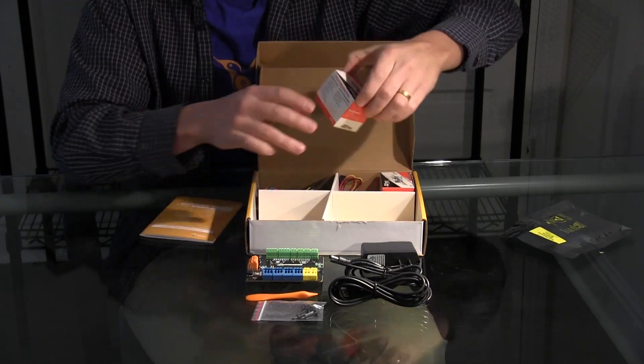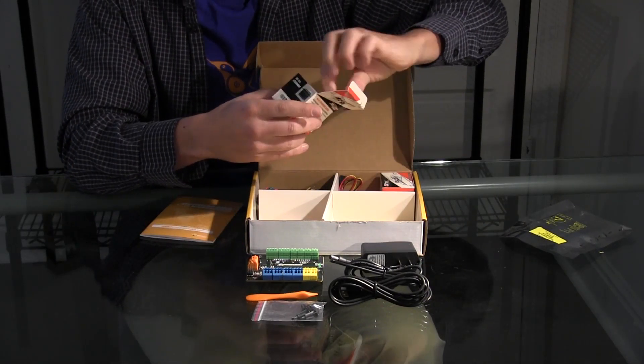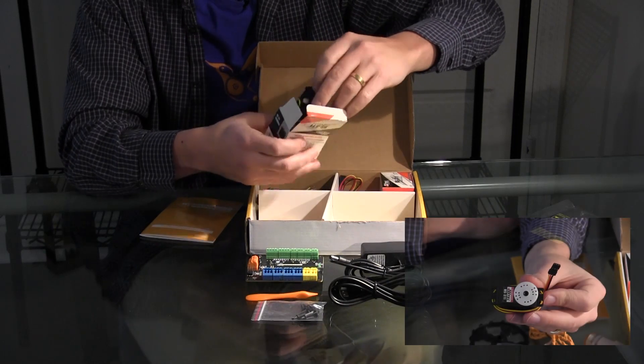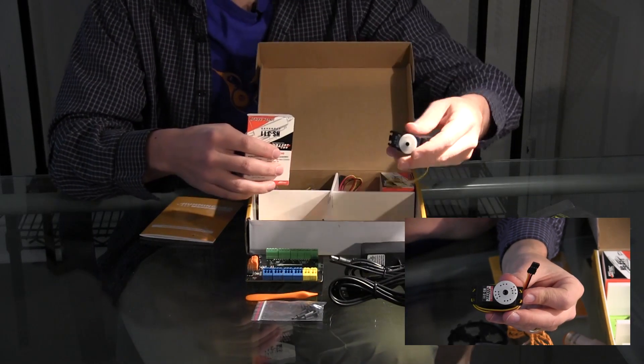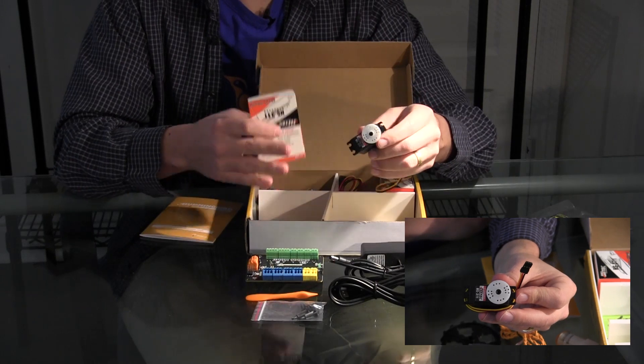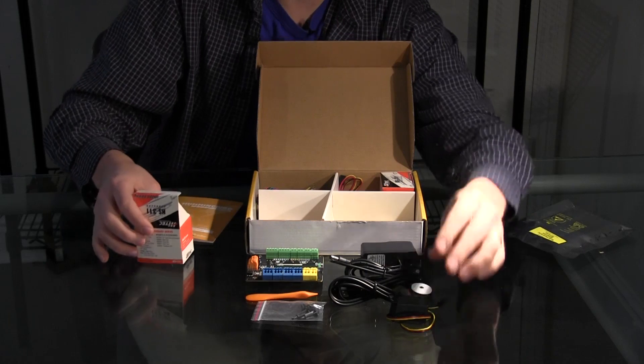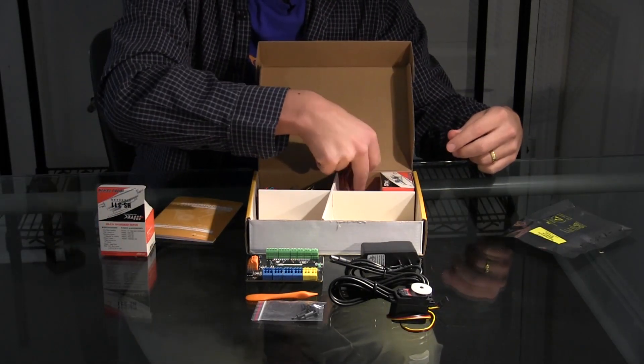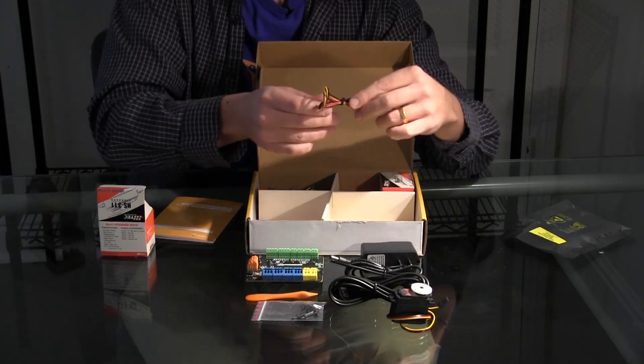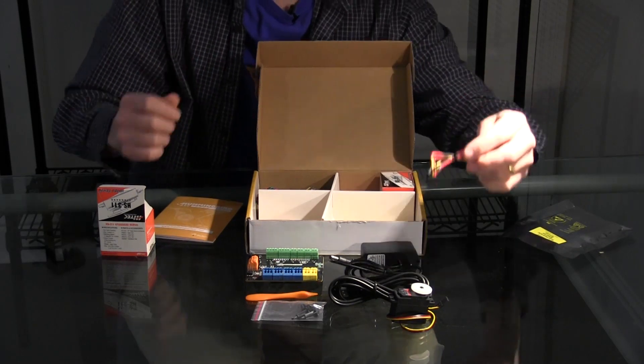We also have two hobby servos. These are great for making repetitive motions as you can control what angle they go to between zero and 180 degrees. So let me put one servo here just so you can see that. We also have one servo extension cable so that you can move at least one of these servos further away.